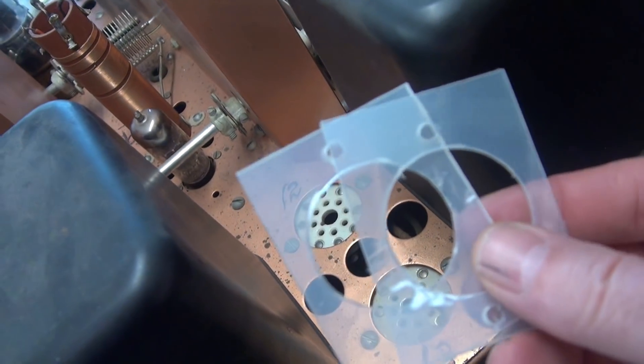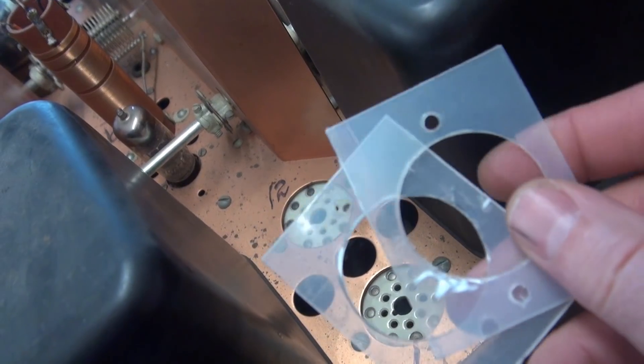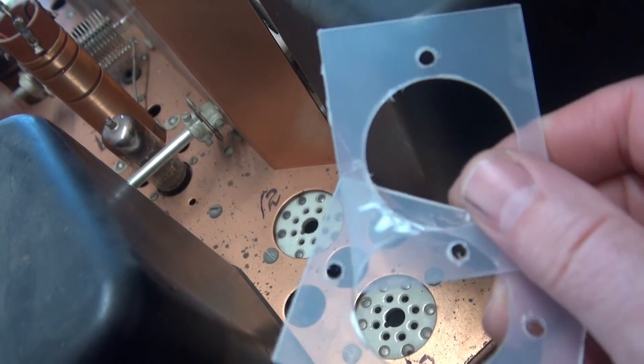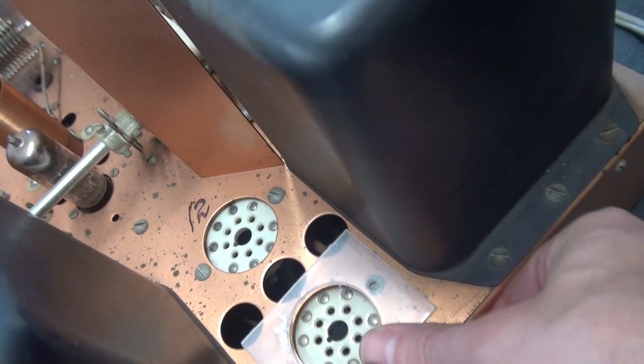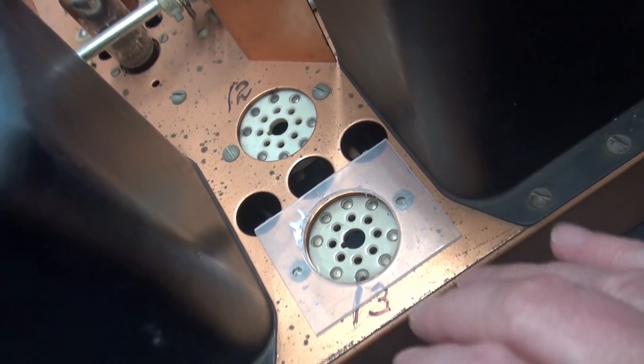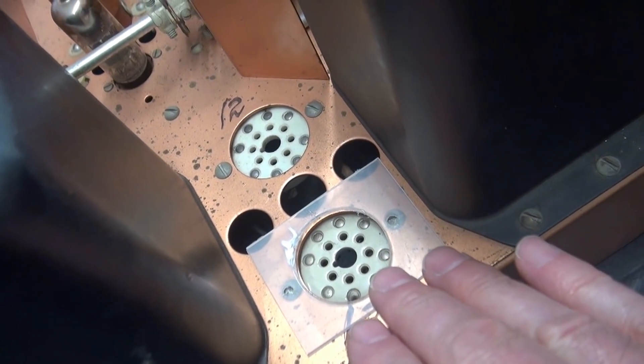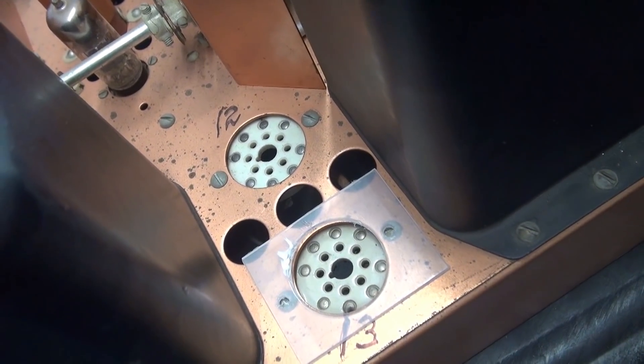So I found some nylon. I use a green lead punch. I punched the center hole here as you can see, and then we have the hole pattern for the tube sockets. So I will install these between the socket and the chassis, spacing the socket down, providing insulation and should never arc again.